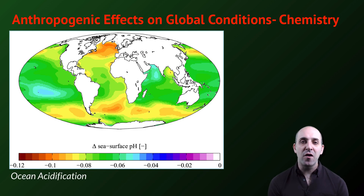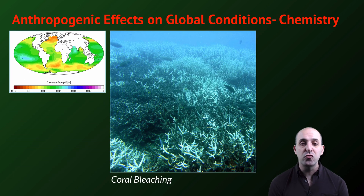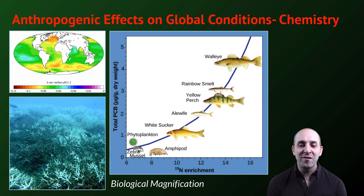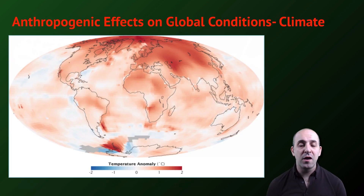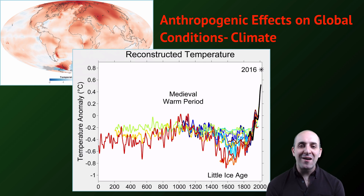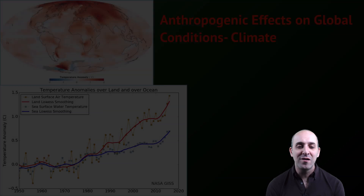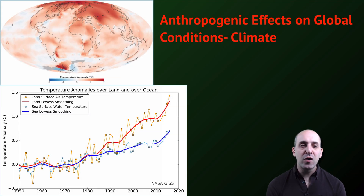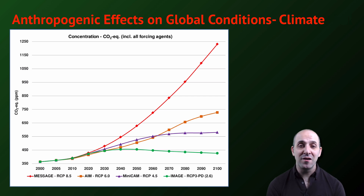Human activities are also having effects on global conditions more broadly. The pH of the oceans is decreasing as atmospheric pollution increases, which is contributing to changes such as coral bleaching. The presence of human-produced toxins in ecosystems moves through the food chain, increasing at higher trophic levels through the process of biological magnification. And the production of greenhouse gases and their release into the atmosphere are having profound effects on our global climate. Looking at the history of global climate over the last 2,000 years, we can see that the last 100 years has demonstrated an unprecedented increase in overall global temperature, directly correlated to the amount of carbon dioxide and other greenhouse gases we are emitting.